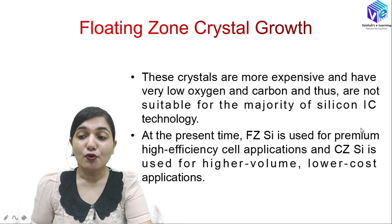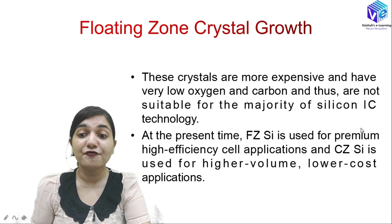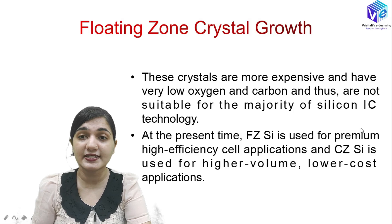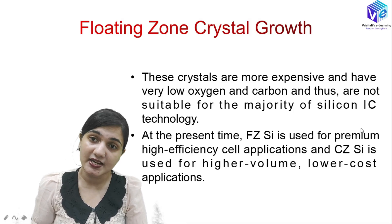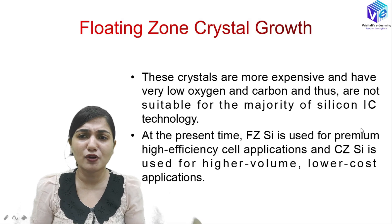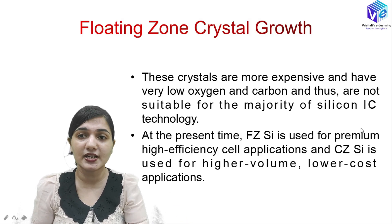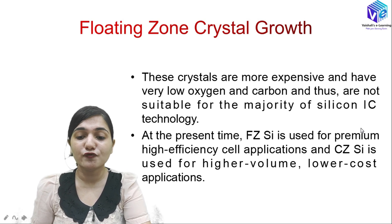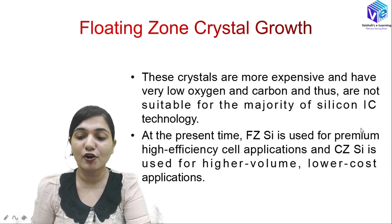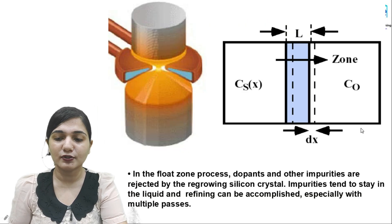Crystals that are more expensive but have very low oxygen and carbon are not so suitable for the majority of silicon IC technology. This is why CZ crystal growth is used for most commercial applications. At the present time, FZ silicon is used for premium high-efficiency cell applications, while CZ silicon is used for higher volume, low-cost applications.